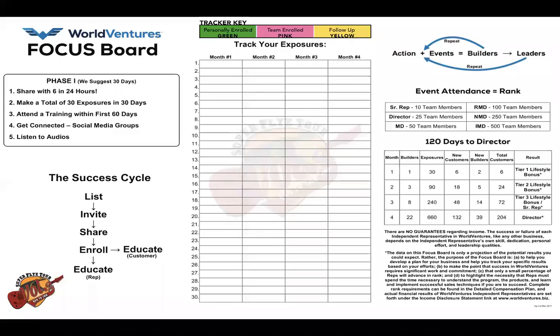The IC is our get-started training. Once you get the success cycle down, the next step is to know phase one. If you're a brand new person who just got started, you want to be focused on phase one — what you do in your first 30 days. If you've been part of WorldVentures and you're planning on starting over, I recommend letting today be the day you start over. Download your focus board and start the right activity.